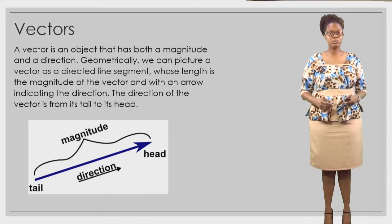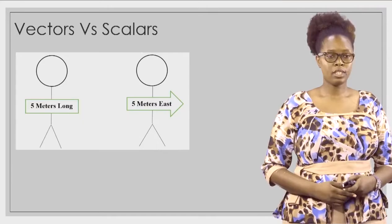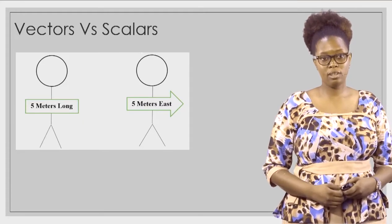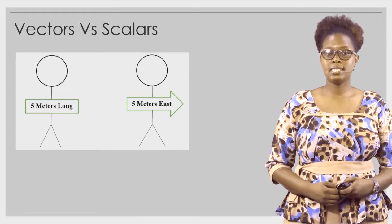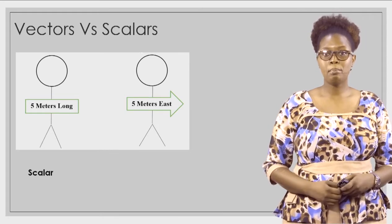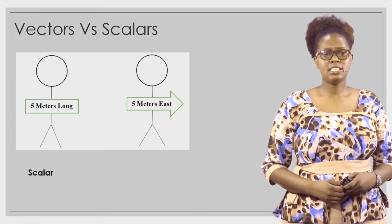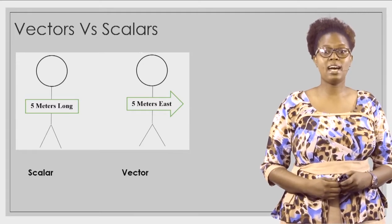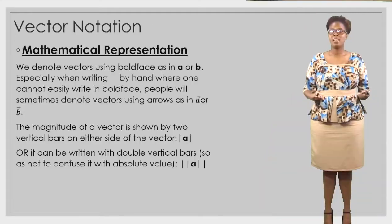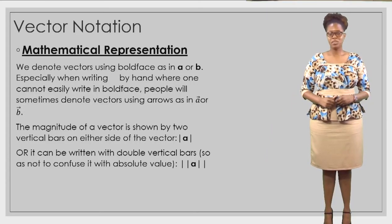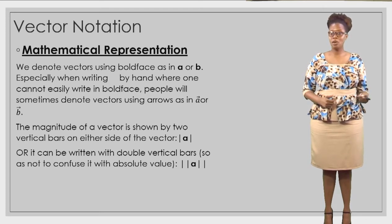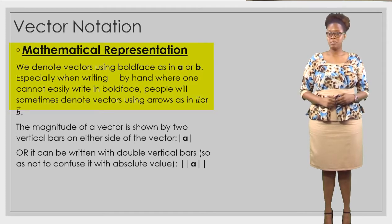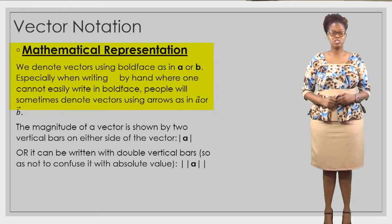So while scalars only have magnitude, vectors have magnitude and direction. If I say that something is five meters long, then that is an example of a scalar quantity. But if I say that something is five meters east, then that is an example of a vector quantity.